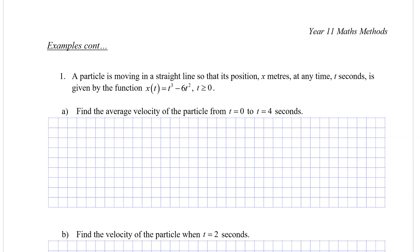Kinematics example 1. A particle is moving in a straight line so that its position, x meters, at any time t seconds, is given by the function x(t) = t³ - 6t², where t is greater than or equal to 0.